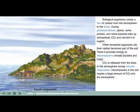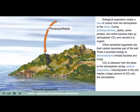Biological organisms create a flux of carbon from the atmosphere to the biota. During photosynthesis, plants, some protists, and some bacteria take up atmospheric carbon dioxide and convert it to sugars.